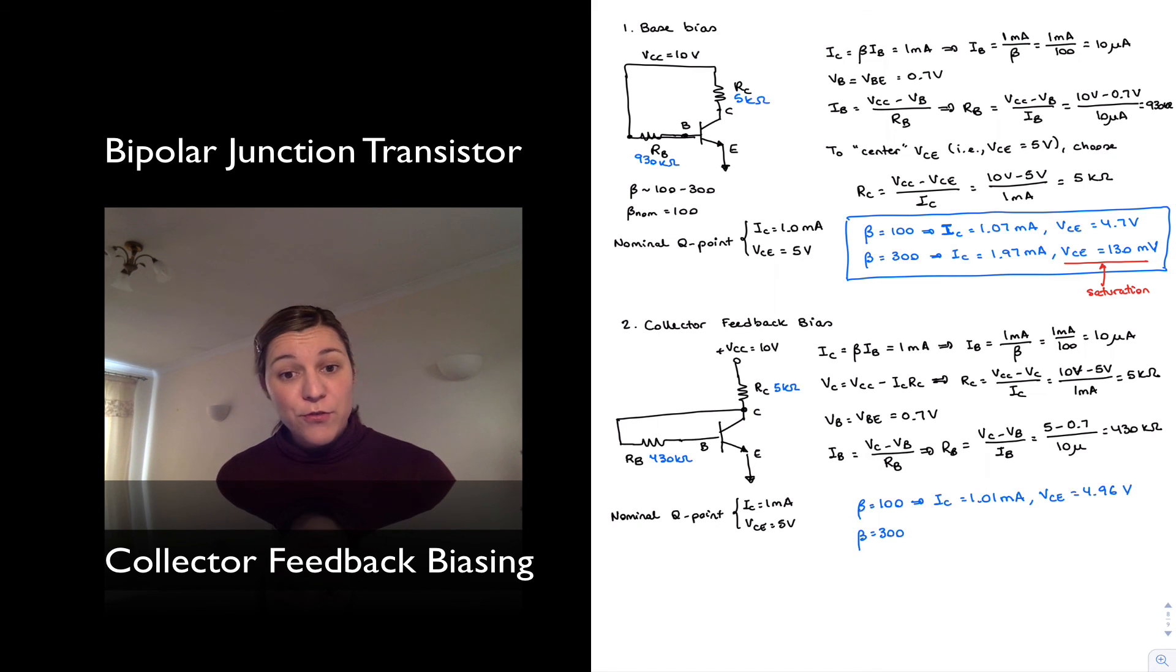When I apply a beta of 300 in my simulation, now I get a current of 1.44 milliamps, so close to 1.5. Kind of a large error there. And a VCE of 2.79. So again, another large error. The good news is, at least I don't go into saturation as in the previous case. But again, not very accurate. My Q point has changed significantly, and that's going to impact my signal swing.